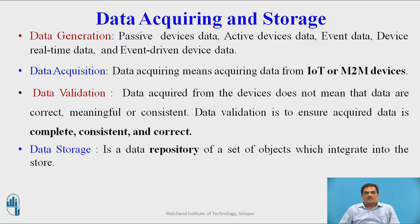Once the data is acquired, we need to validate it for completeness, correctness, and consistency. Data acquired from devices does not mean that the data is correct, meaningful, or consistent, so that needs to be addressed in the validation process. Once validation is done to ensure acquired data is complete, consistent, and correct, we then store that validated data in the repository.